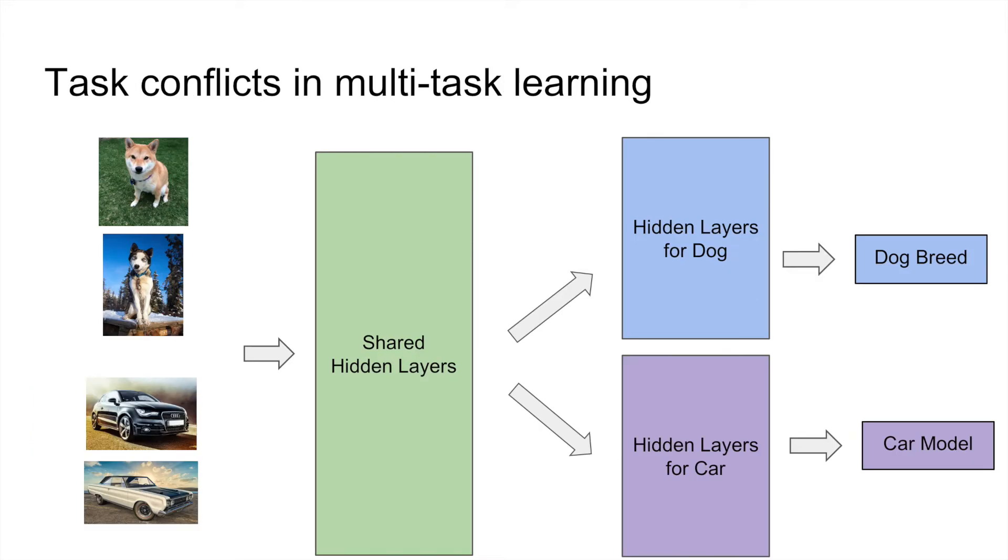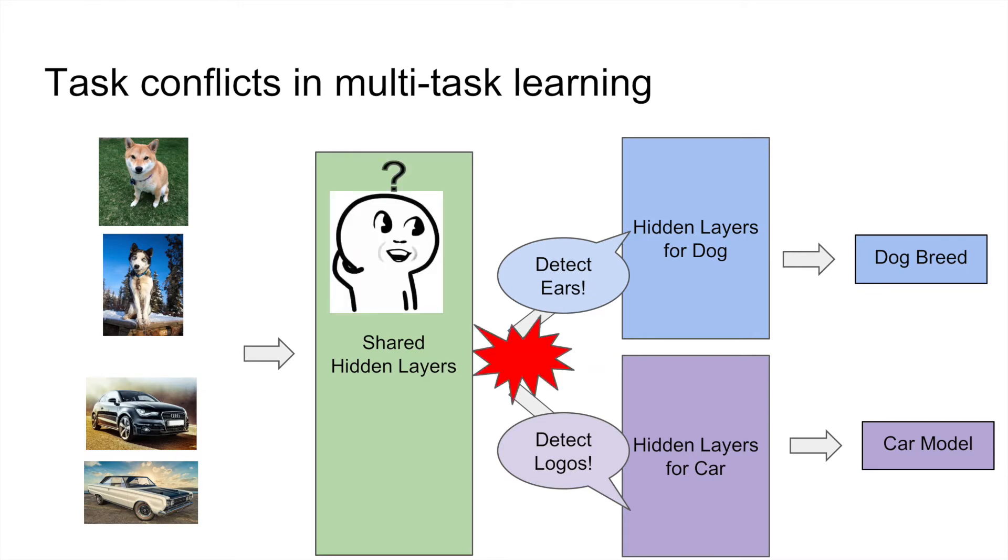If we put these two tasks in a multi-task learning model, the training signals from the two tasks will tell the shared hidden layers to learn very different features. As a result, the shared hidden layers will be hard to train due to the conflicts of the two tasks.